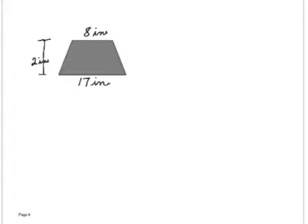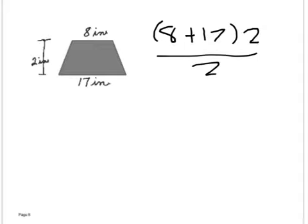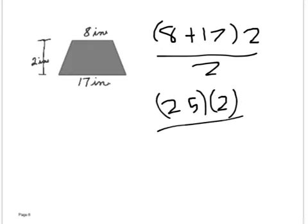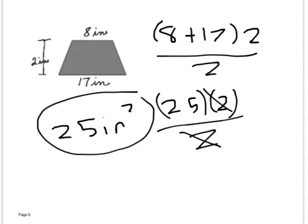All right, base one is eight, the base two is 17. Does it matter if I switch them? No, again, commutative property says I can switch it. Eight plus 17 times by the what? Two, the height. Okay, then we divide it by two. Eight plus 17 is 25. So we're supposed to take 25 times two, divide by two. Well, if you're timesing by two and dividing by two, you might as well not do any of that. You might as well just leave it at 25 inches squared. The twos would cancel because 25 times two is 50, 50 divided by two is 25. Okay, any questions on how to do that?